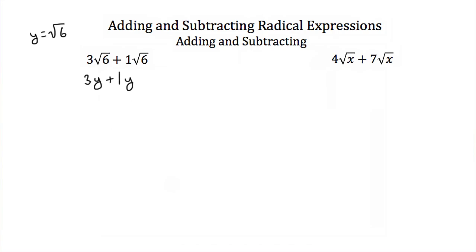If I wanted to add 3y and 1y, I would just add the coefficients. 3 plus 1 is 4, and they're both multiplied by y. Now substituting the square root of 6 back in for y, I end up with 4 square roots of 6. So if you have like radicals, all you have to do is add the coefficients in front of your radical expressions. 3 square roots of 6 plus 1 square root of 6 is 4 square roots of 6.